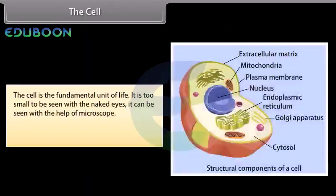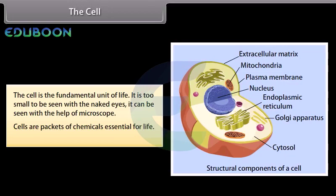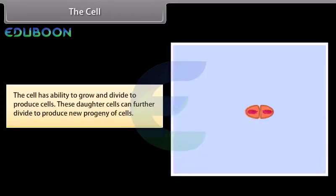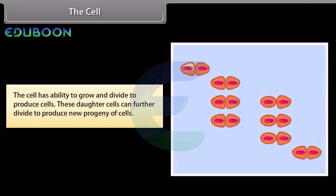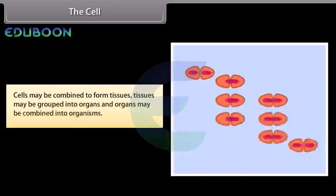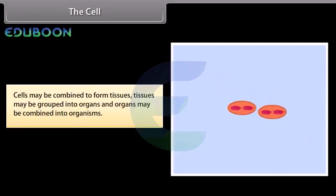The cell is the fundamental unit of life. It is too small to be seen with naked eyes; it can be seen with the help of a microscope. Cells are packets of chemicals essential for life. The cell has the ability to grow and divide to produce daughter cells, which can further divide to produce new progeny. Cells may be combined to form tissues, tissues grouped into organs, and organs combined into organisms.